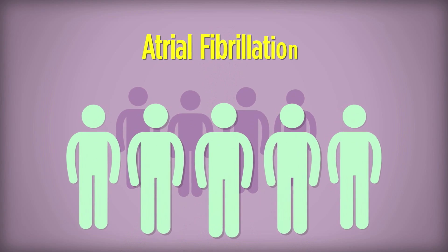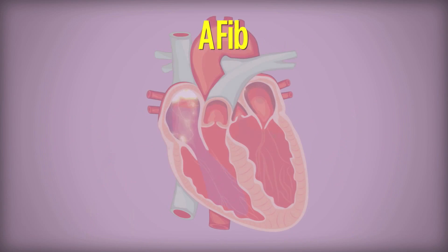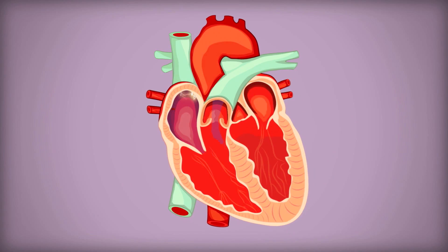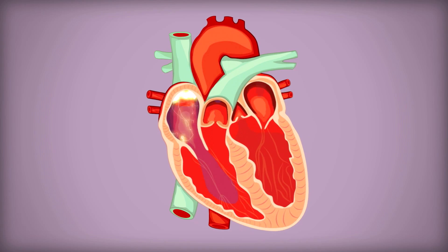In people with atrial fibrillation, also called AFib, the electrical signals are abnormal and largely chaotic and cause the heart's chambers to beat irregularly and often rapidly.